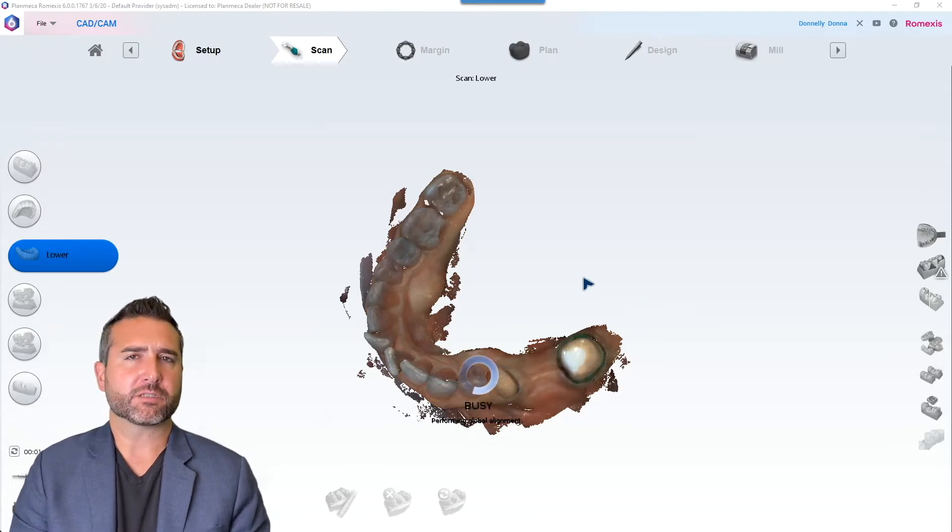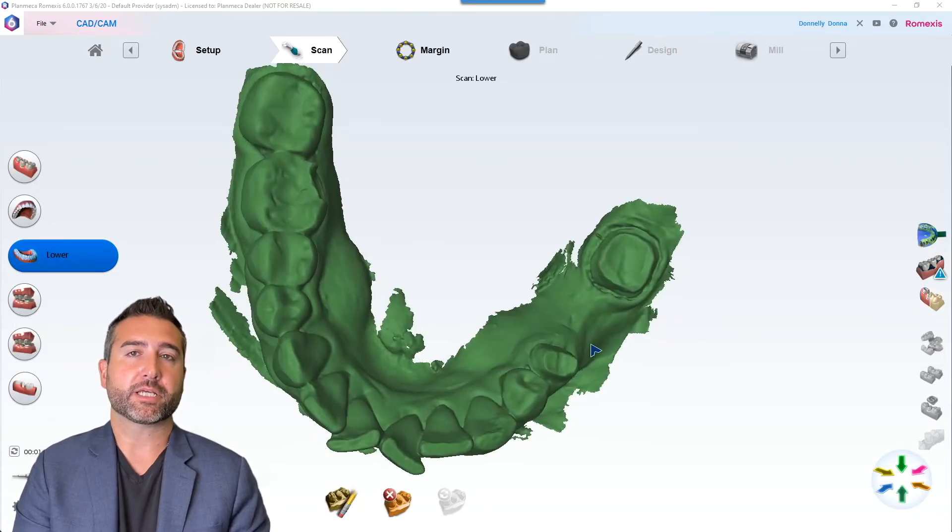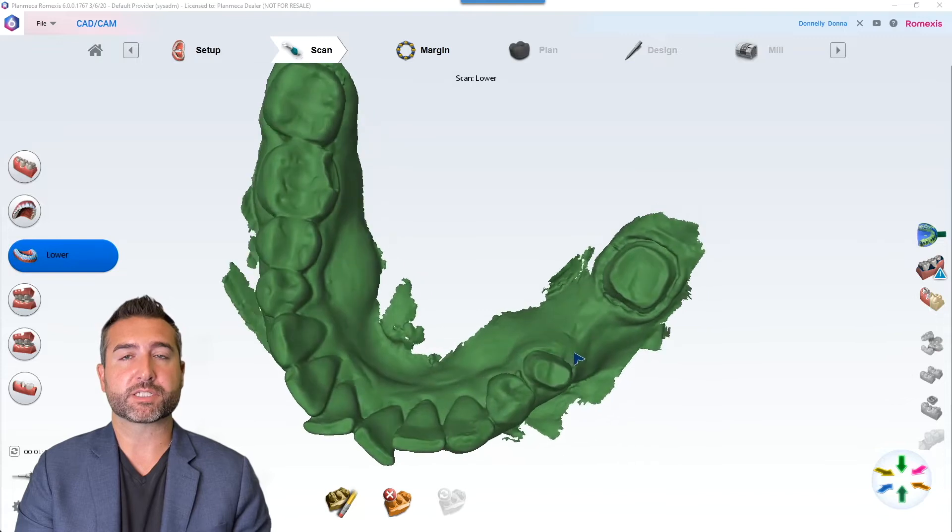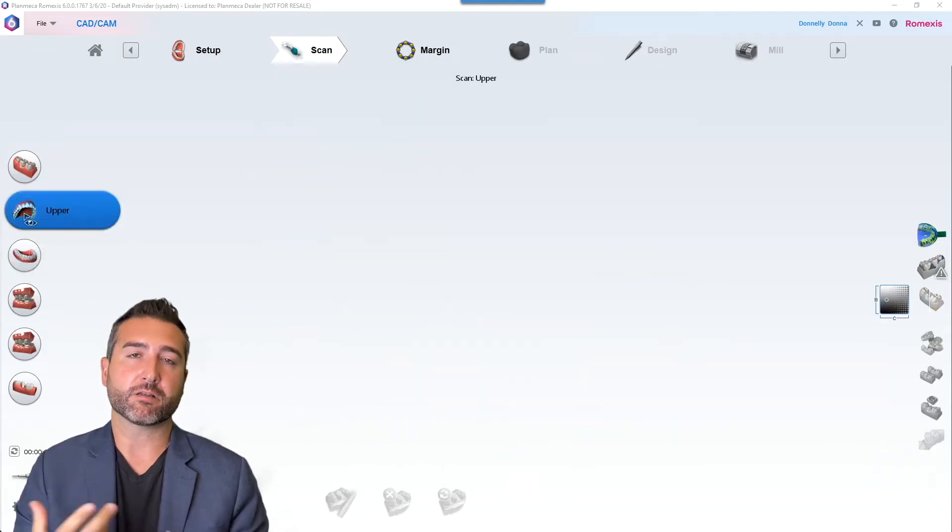Really take a good look and be kind of critical. Make sure that we can see everything, that we have the retraction that we need. It's really important to look at it both in the stone colored view. In this case for the mandible it always defaults to green. And also look at it in the ply color model.